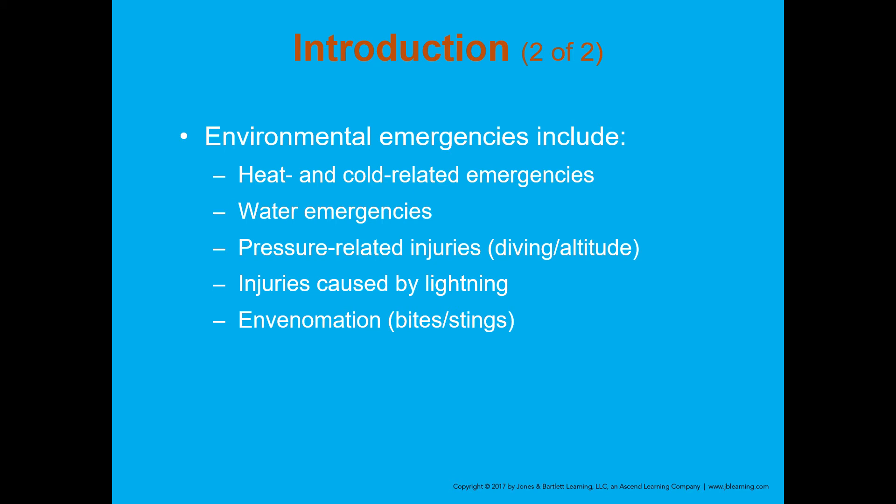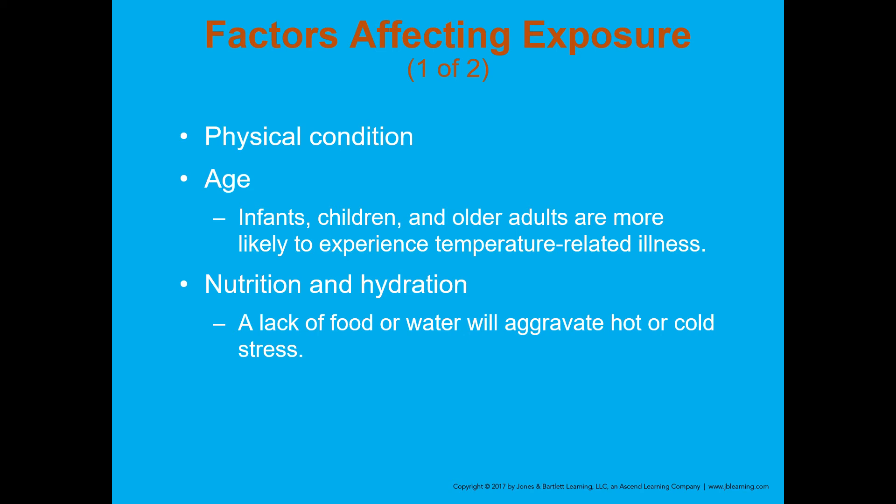Factors affecting exposure include the physical condition and age of the patient. Infants, children, and older adults are much more likely to experience temperature-related illnesses because in the early and later stages of life we don't have the fat supplies, body mass, or mechanisms to overcome temperature-related emergencies. Nutrition and hydration are also factors — a lack of food or water will aggravate any hot or cold stress on the body.